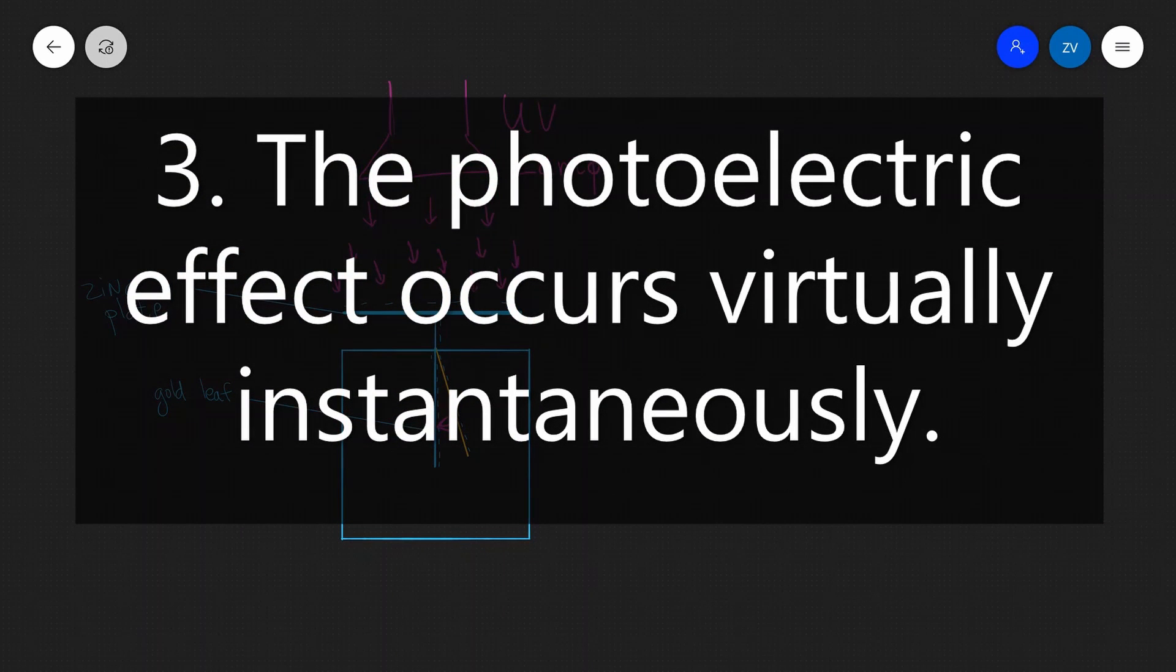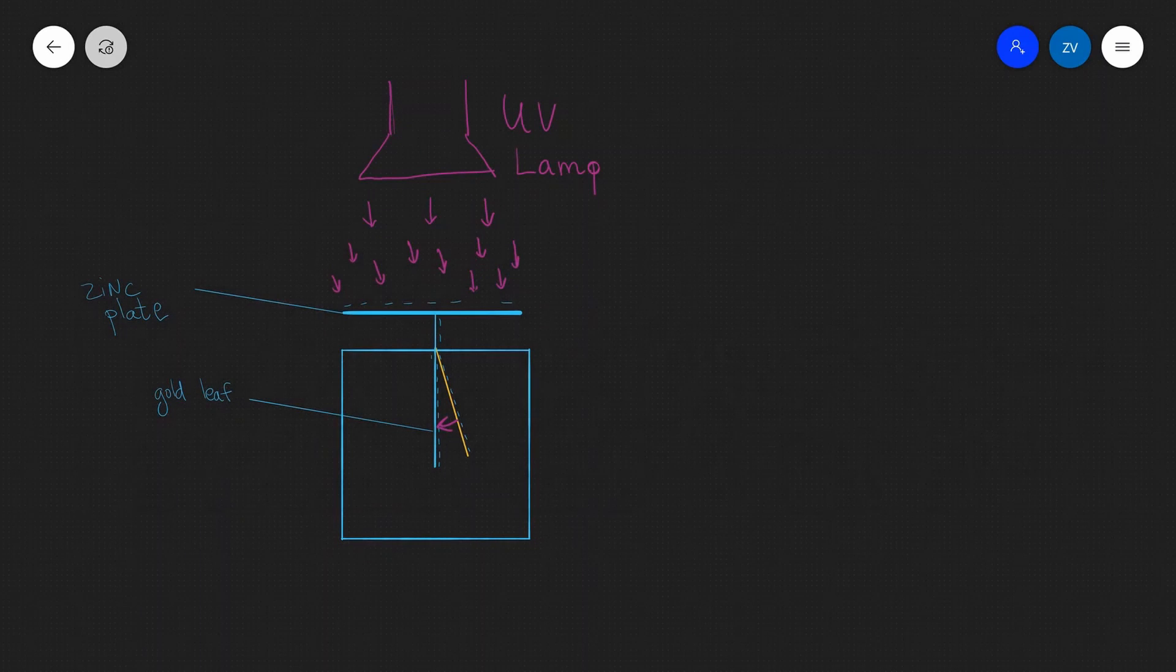Our third finding is that the gold leaf starts to fall down virtually instantly. That means that the photoelectric effect works almost instantaneously. Now, classical theory suggests that if light is a wave, if you had a visible light source for a sufficiently long time, then enough energy would gather to eject and emit electrons from the surface of the zinc plate. In practice, this does not happen. We can have a visible light source. We can shine it for thousands of years at a zinc plate. This would be a very boring experiment. However, we can do it and an electron is never going to be emitted. However, if we switch that to UV light, almost instantly we are going to get emission.